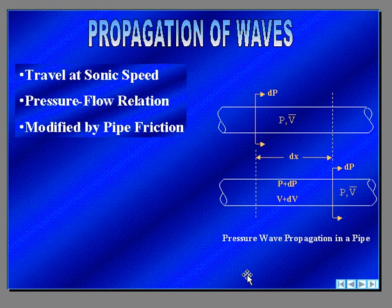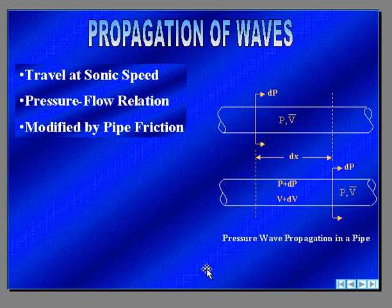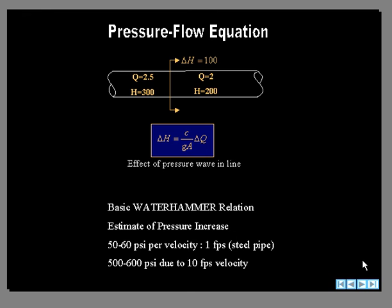Some of the key equations that we use, a pressure wave, of course, travels at sonic speed, and it changes the pressure by amount delta p, and the velocity by the amount delta v. This very simple equation relates the pressure change in feet head to the flow change. The constant is wave speed over ga. And since wave speed is pretty high, this is a fairly large number.